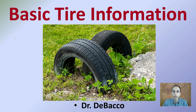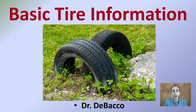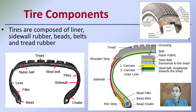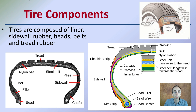Here I'm going to go over some basic tire information that may involve some things that you've seen but maybe not have appreciated what is actually there on a tire. Starting with the components of a tire, a tire is composed of linear sidewall rubber, beads, belts, and tread rubber, and there are several layers composed of them.